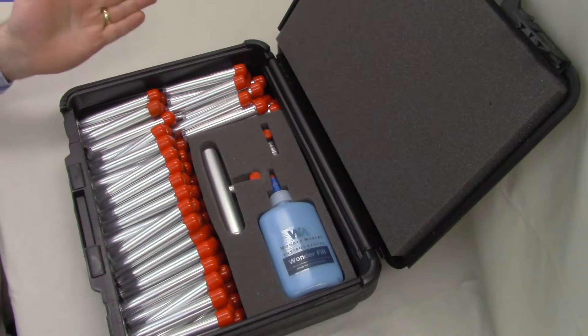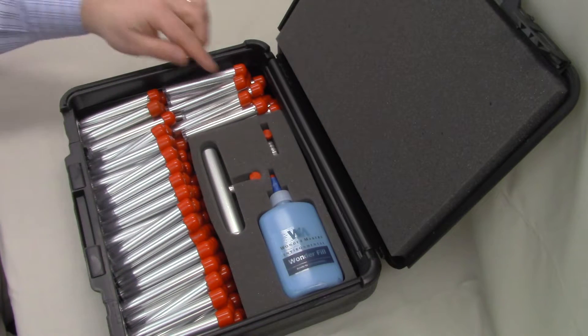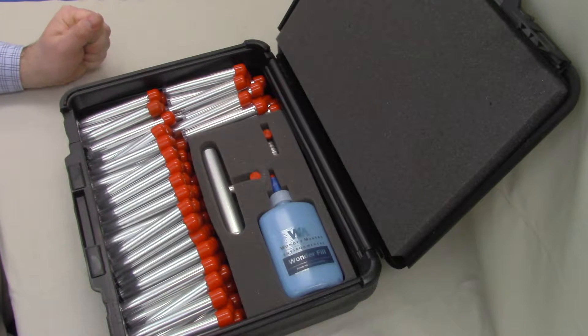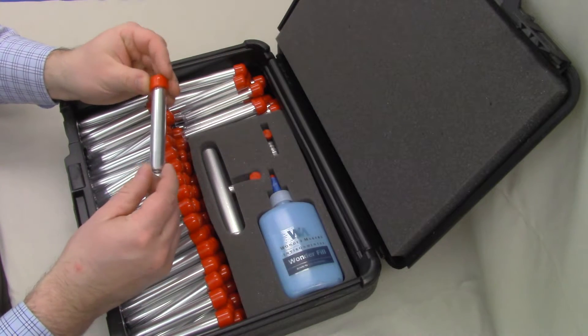Setting the brochure aside, we've got the actual contents of the case. We've got 100 cutter sleeves lined up along the side and the bottom here. We have a power driver, a handle, and Wonderfil. We're going to go through what these different components are. Let's start off by grabbing a cutter out and showing you how to open it and why we package them this way.